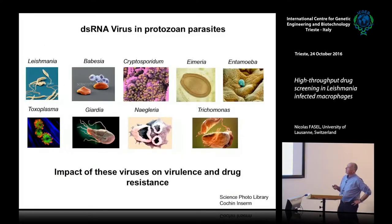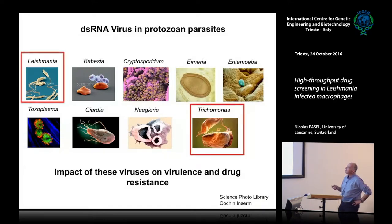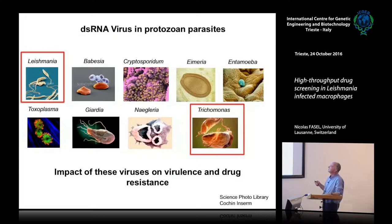This type of virus is found in several protozoan parasites. Among these different protozoan parasites, there are two for which an increase in virulence has been shown: it has been demonstrated for Trichomonas and in Leishmania. It can also play a role in drug escape or drug resistance, which I will talk about mainly tomorrow.